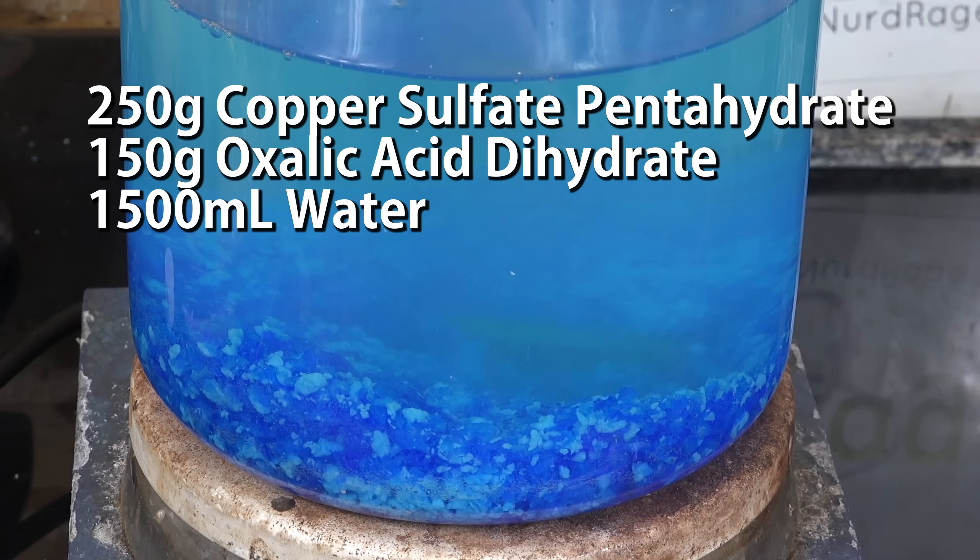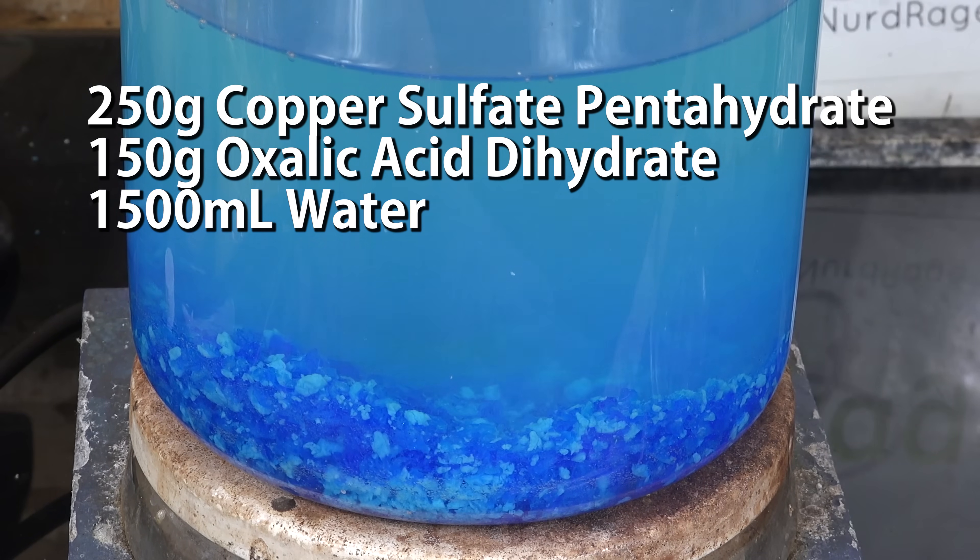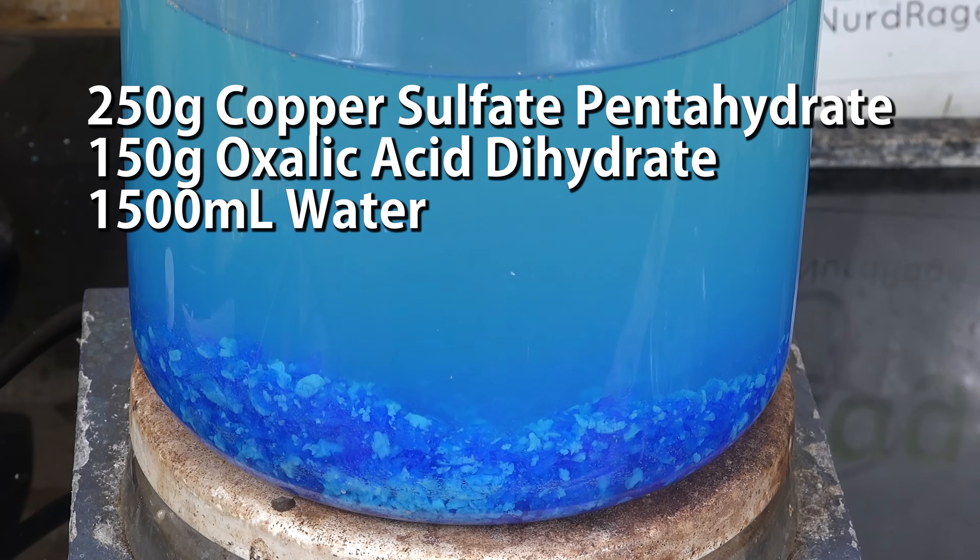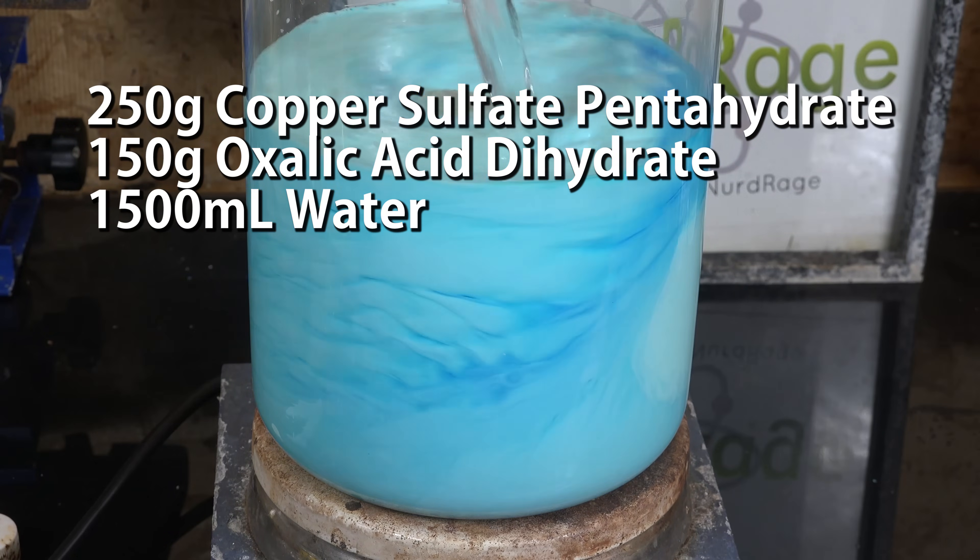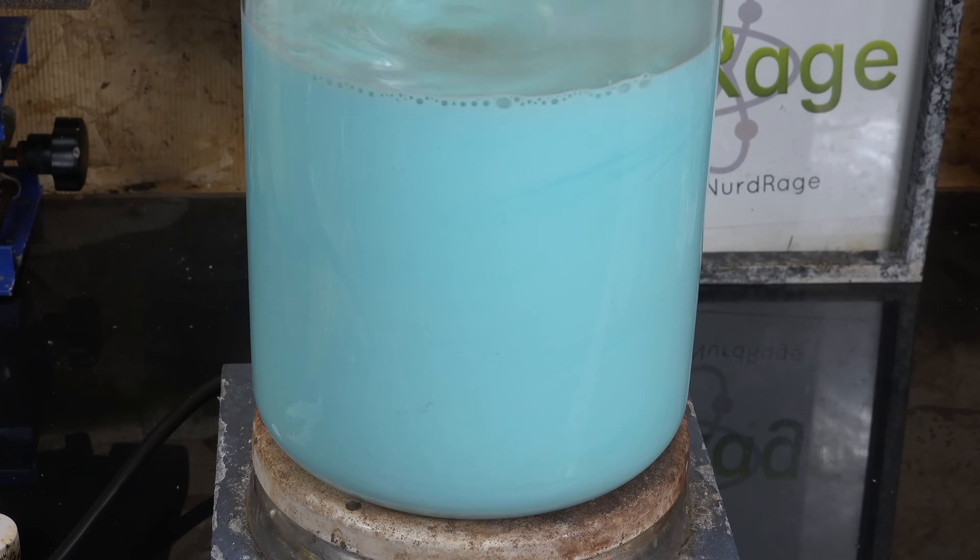So I prepared a mixture consisting of 250g of copper sulfate and 150g of oxalic acid in a total of 1.5 liters of water. Interestingly enough it did work and it seemed to produce the proper precipitate of copper oxalate.